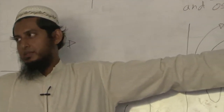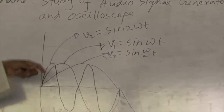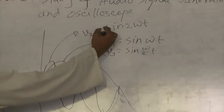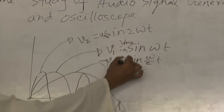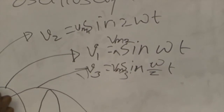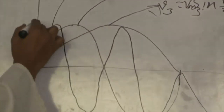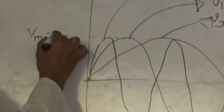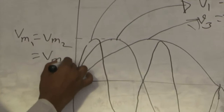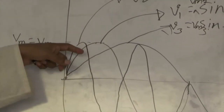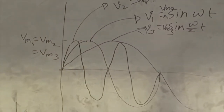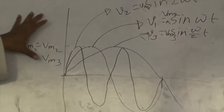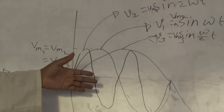Amplitude is the same. Vm1, Vm2, Vm3 — the amplitude remains the same across these. Amplitude is same and equal. It is Vm3. So the amplitude is the same while the frequency changes.